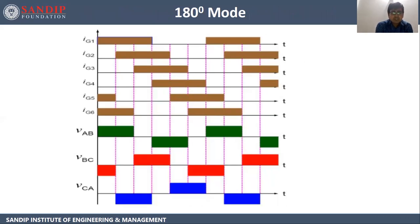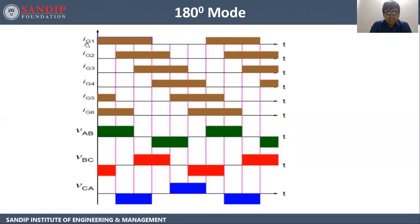This three-phase voltage source inverter operates in two modes: one is 180-degree mode and the second is 120-degree mode. Let's see 180-degree mode first. In 180-degree mode, each device is going to conduct for 180 degrees. You can see the trigger current IG1 for thyristor 1. One mode interval is 60 degrees, so there are three intervals of 60 + 60 + 60. The first device is going to trigger for 180 degrees.